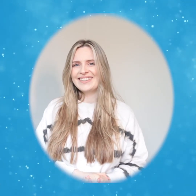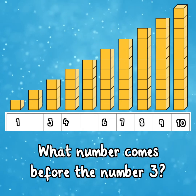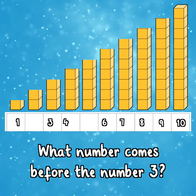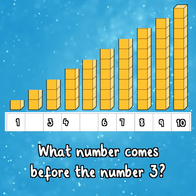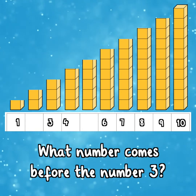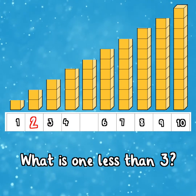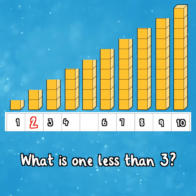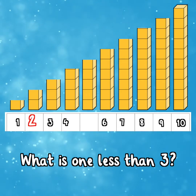Can you complete the number track? Let's focus on the first missing number within the number track. What number comes before the number three? Two. So what is one less than three? That's right, the answer is two.